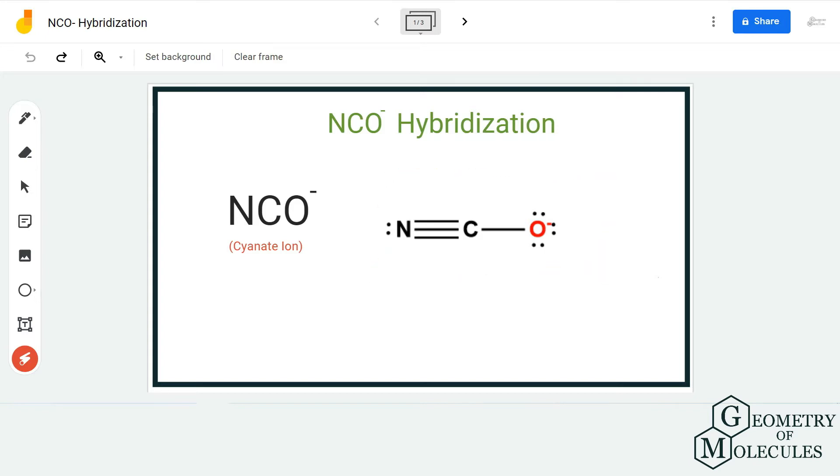Here is the Lewis structure of NCO minus ion, in which the carbon atom is forming a triple bond with the nitrogen atom and a single bond with the oxygen atom. To find out the hybridization of this molecule, we are going to use the steric number formula.